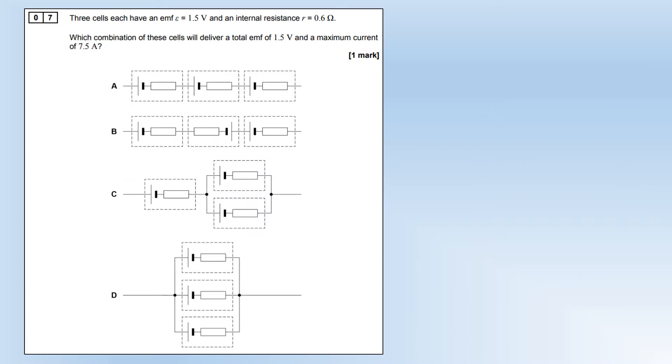Three cells each have an EMF of 1.5 volts and an internal resistance of 0.6 ohms. Which combination of these cells will deliver a total EMF of 1.5 volts and a maximum current of 7.5 amps? We don't even need to think about the internal resistance here. Only one of these combinations gives an EMF of 1.5, and that's option D, because they're all in parallel.